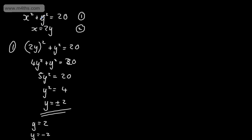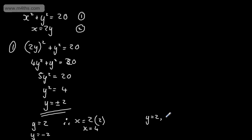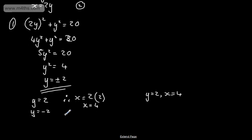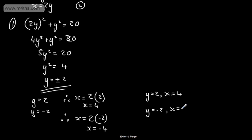We now substitute these back through the linear equation. When y equals 2: x equals 2 times 2, so x equals 4. So one solution is y equals 2 and x equals 4. When y equals minus 2: x equals 2 times minus 2, so x equals minus 4. The other solution is y equals minus 2 and x equals minus 4.